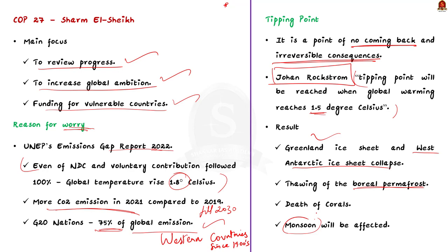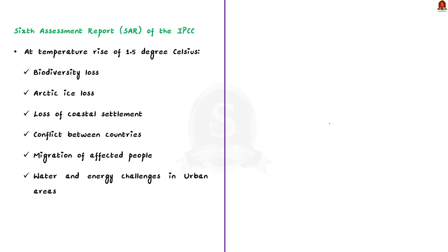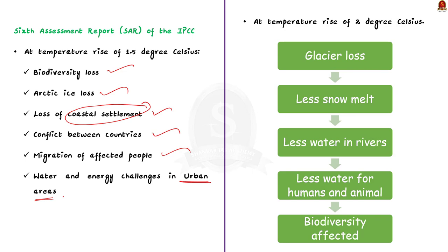Johan Rockström is worried that current steps taken by global countries will not be adequate to limit temperature rise to 1.5 degrees Celsius. Even if we manage to limit it to 1.5°C, there will still be environmental damage. According to the IPCC's Sixth Assessment Report, by 2040 there will be biodiversity loss, Arctic ice loss, and threats to coastal environments, leading to conflict, migration, and challenges to water and energy access. If temperatures rise to 2 degrees Celsius, glaciers will decline, rivers will dry up, flooding will increase, and 18% of land species could go extinct.